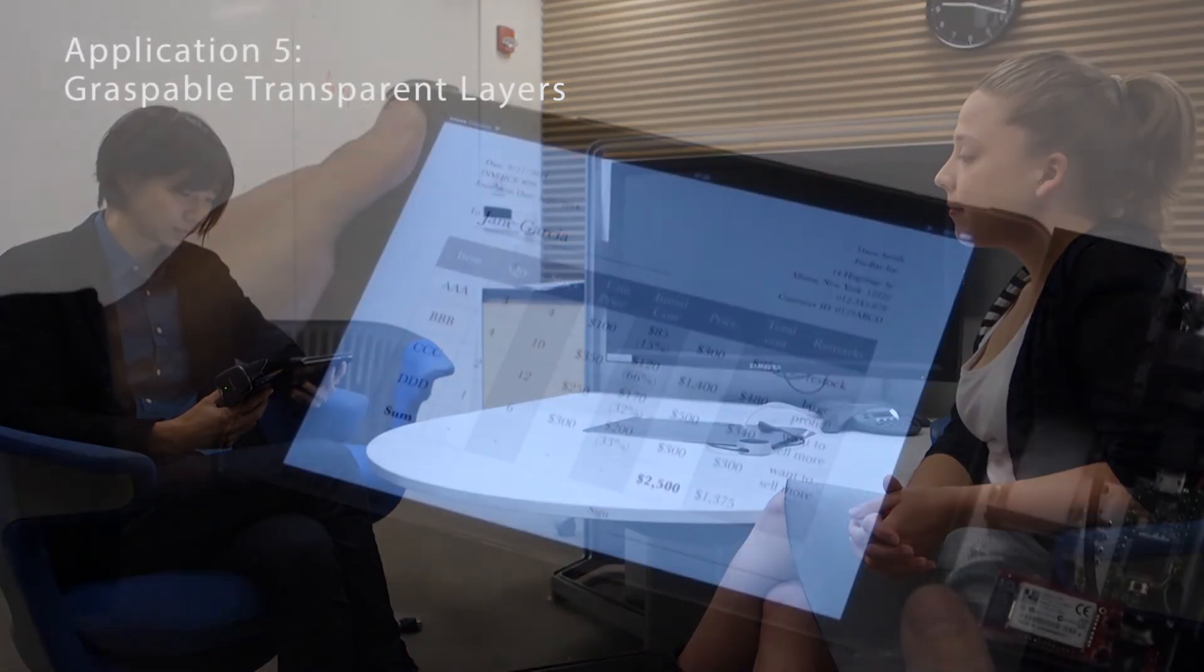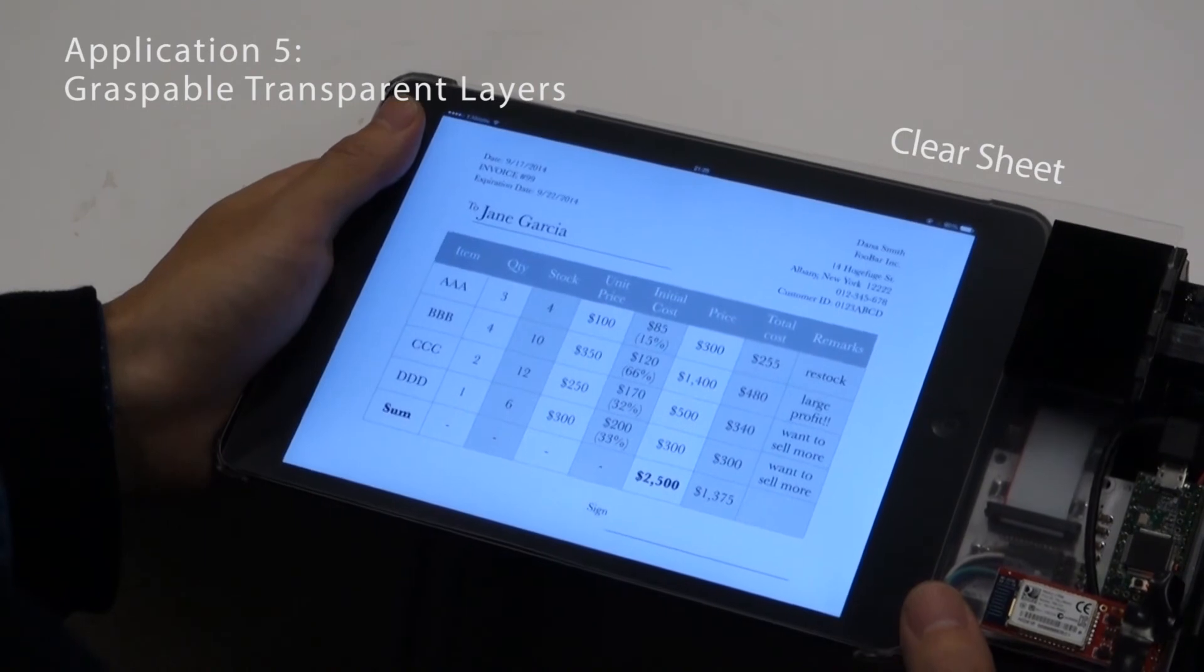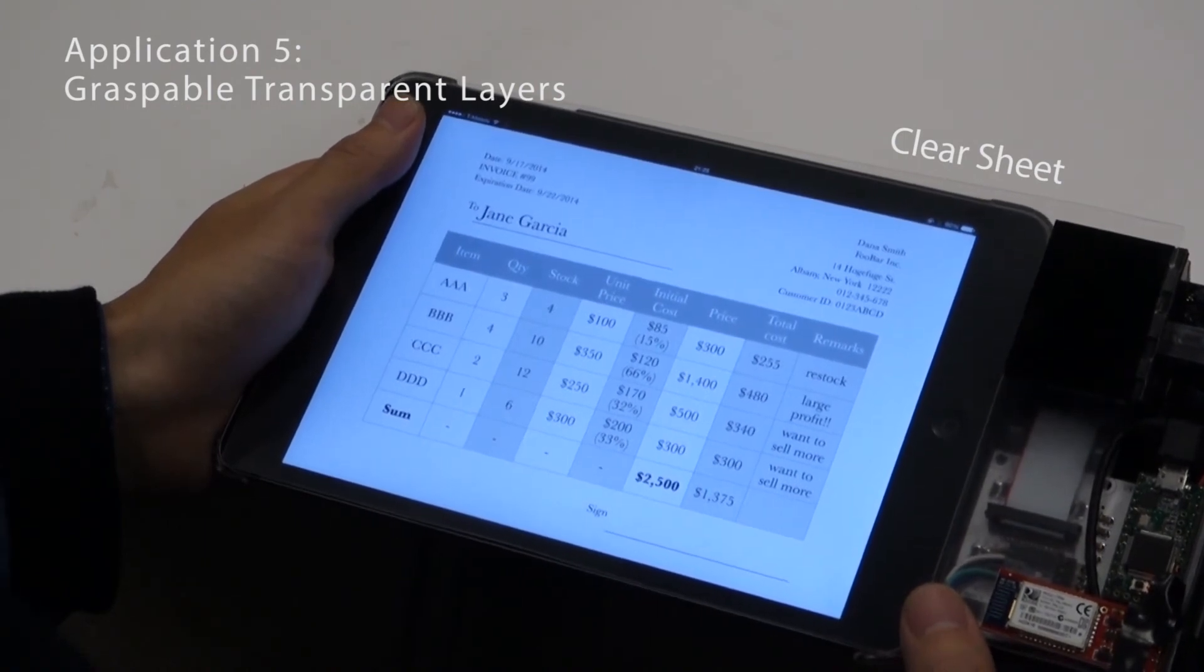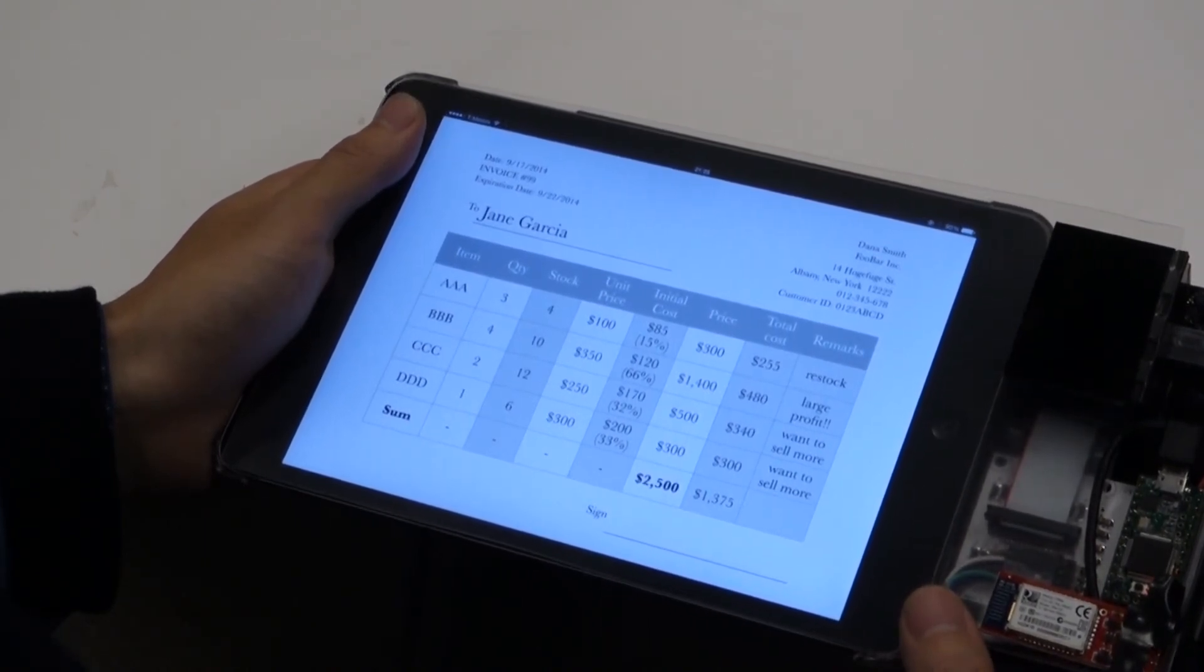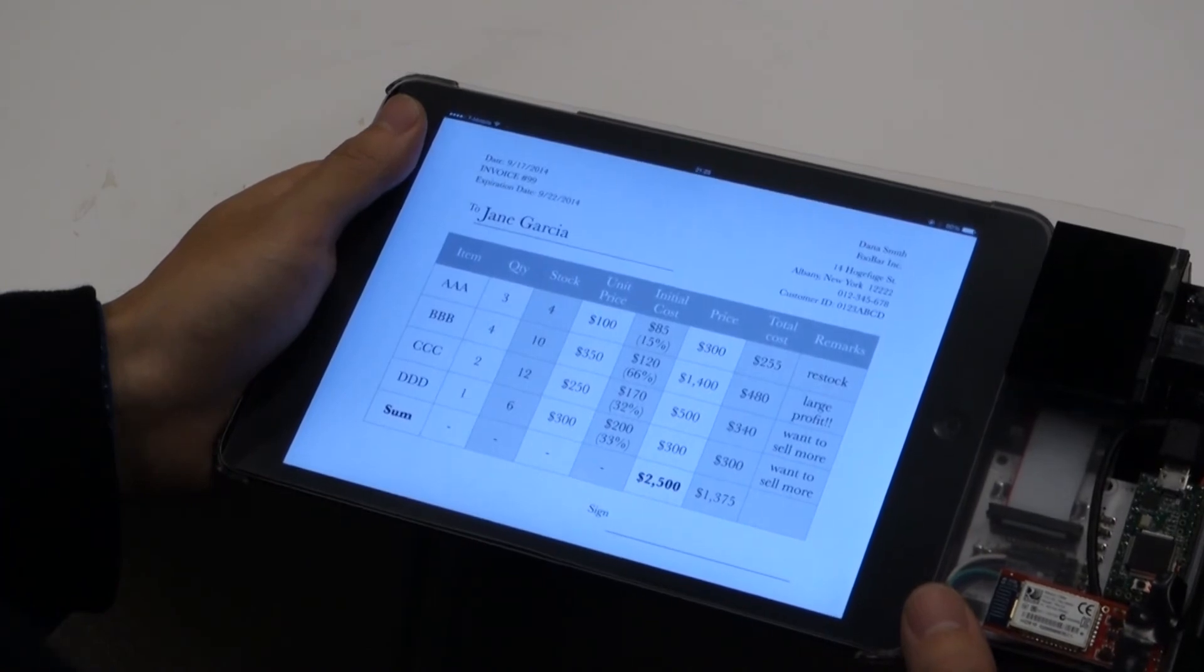SPECTRANS can also be used to enhance conventional interactive screens, like a tablet device. In this example, a salesperson is preparing a quotation in a business meeting. The salesperson can see both the cost and other information, such as how many stocks are left in the warehouse.